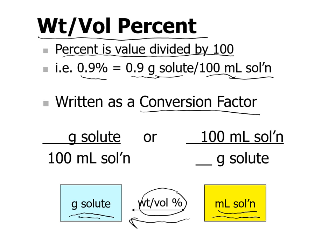For a 0.9% solution, we can write the conversion factor as 0.9 grams of solute per 100 mL of solution. Because these are equal, we can also flip the fraction and say 100 mL of solution is equivalent to 0.9 grams of solute — giving us two conversion factors.